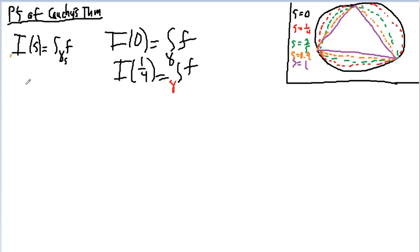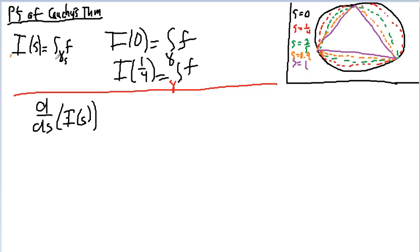So what we're going to do, we're going to have that this is differentiable, and so we're going to differentiate this function, I sub S, which only depends on S, right? This is just the value of an integral, and an integral is just a number, given a particular point in the homotopy.